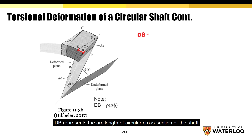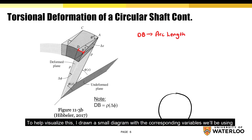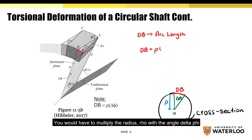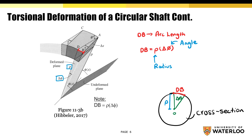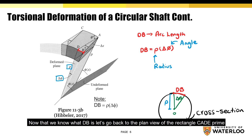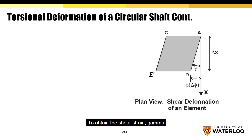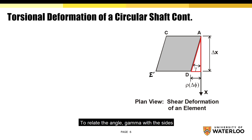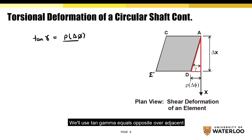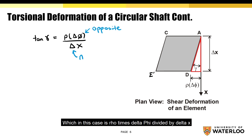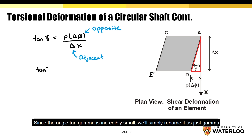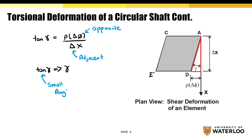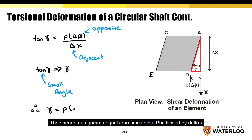D-B represents the arc length of a circular cross section of the shaft. To obtain the arc length, you multiply the radius rho (ρ) by the angle delta phi (Δφ), giving D-B = ρ·Δφ. To obtain the shear strain gamma, we analyze the triangle outlined in red. Using tan γ = opposite over adjacent, we get tan γ = ρ·Δφ / Δx. Since the angle is incredibly small, tan γ ≈ γ, and therefore the shear strain equation becomes: γ = ρ·Δφ / Δx.